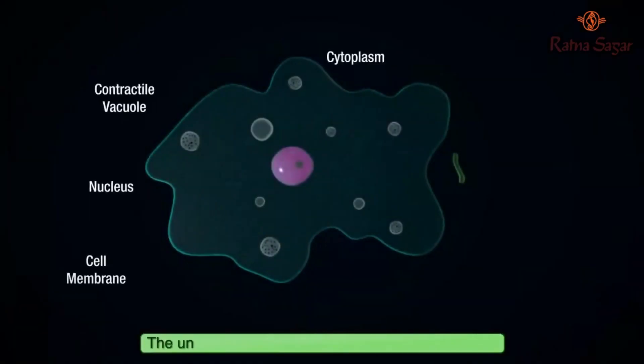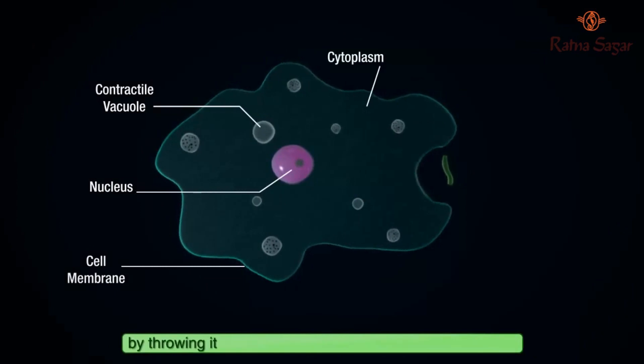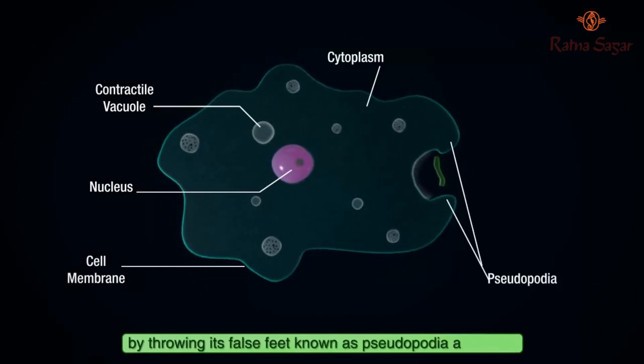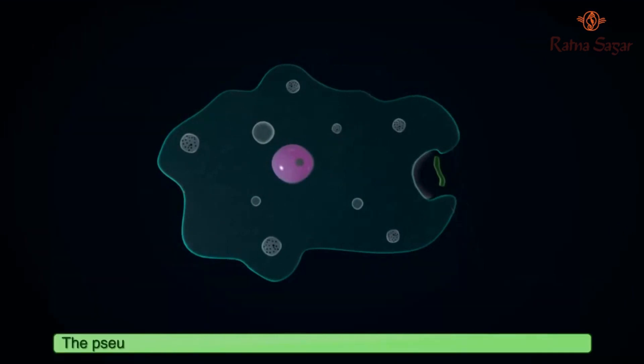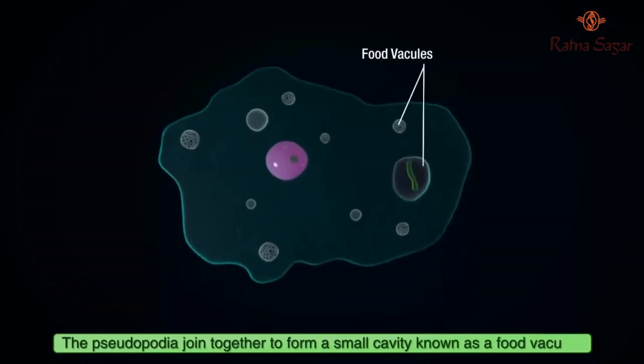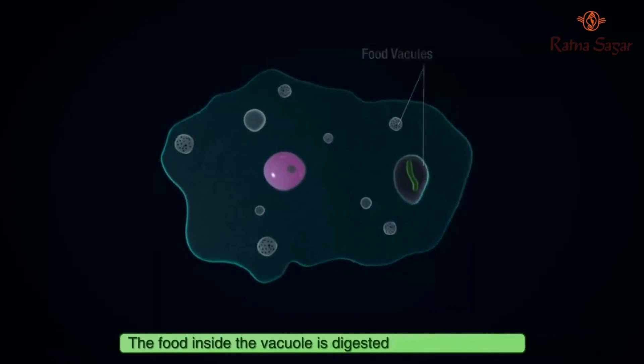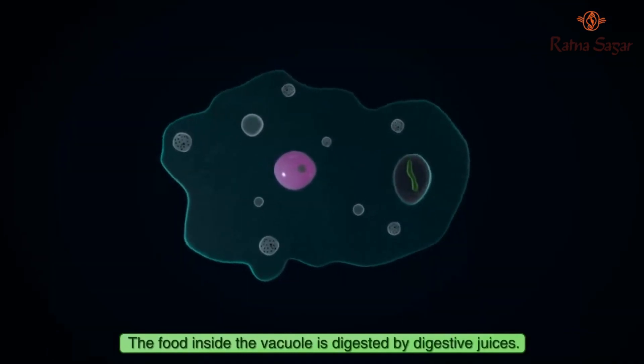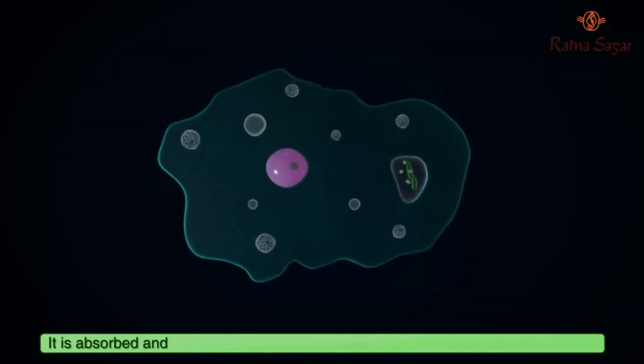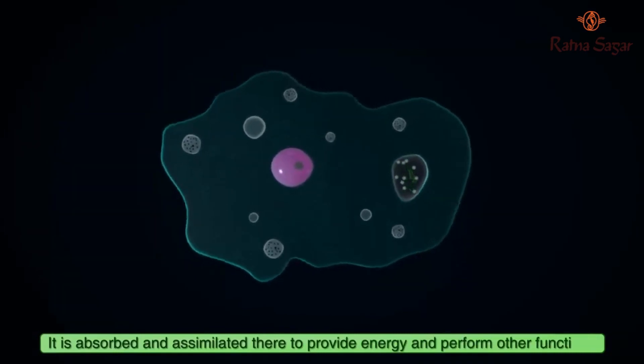The unicellular amoeba engulfs tiny particles of food by throwing its false feet, known as pseudopodia, around it. The pseudopodia join together to form a small cavity known as a food vacuole. The food inside the vacuole is digested by digestive juices. It is absorbed and assimilated there to provide energy and perform other functions.